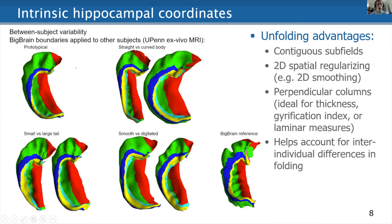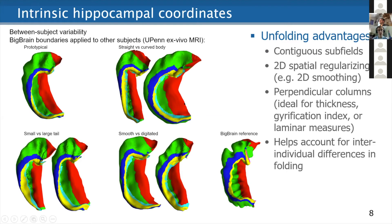I want to point out another thing. Here on the bottom right is the BigBrain reference, and here are a bunch of other hippocampi from a UPenn XVIVO dataset. There is huge inter-individual variability in just the gross shape of the hippocampus — a typical example here, a hippocampus with a very straight body, one with a very curved body, small or very large tail at the posterior, or a fairly smooth hippocampus versus a fairly digitated or gyrified one. All of these hippocampi were defined with the same set of subfield boundaries — they were flat mapped, and then the boundaries from our BigBrain reference were applied to these samples and mapped back to native space. We think that's a very useful way to account for inter-individual variability in gross morphological shape.